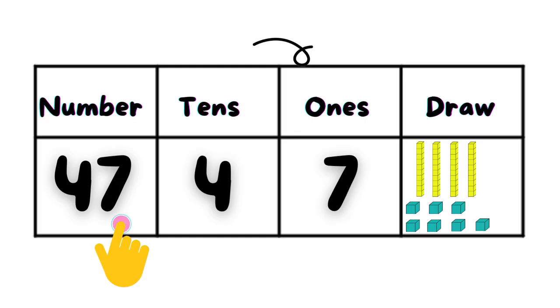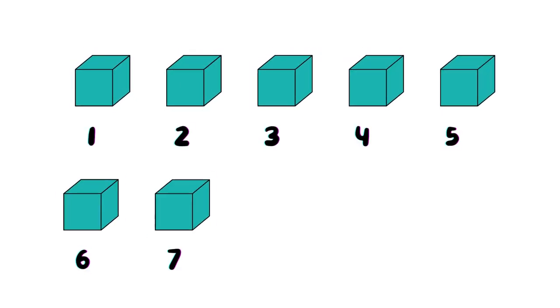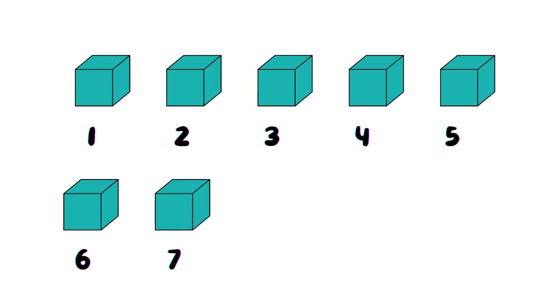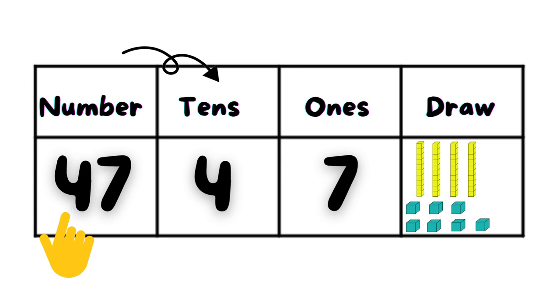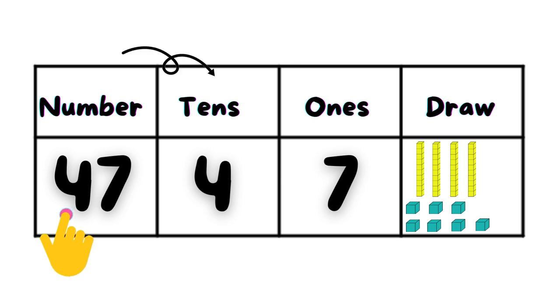Now let's keep going. What if we have the number 47? What does the 7 represent? It's in the ones place, so it represents 7. Now what about the 4? It's in the tens place, so it represents 40.